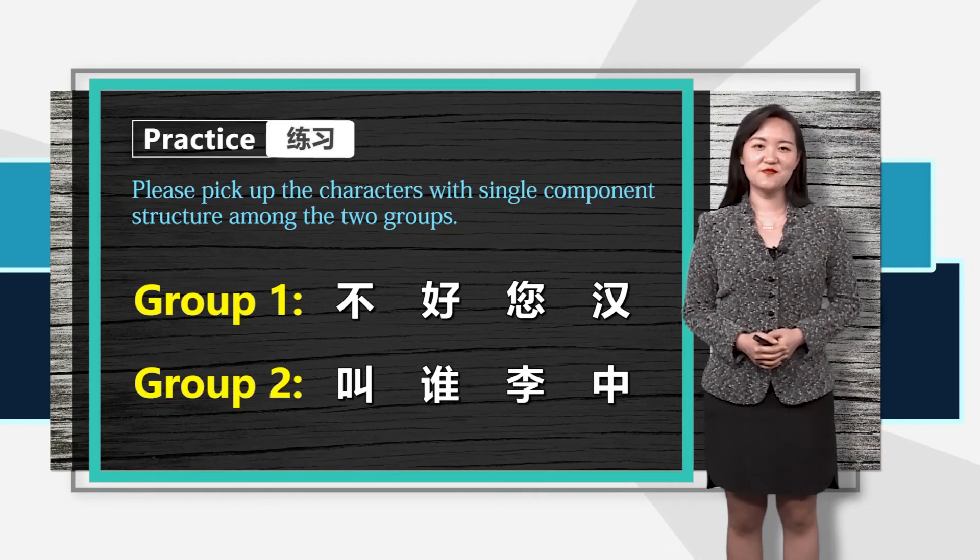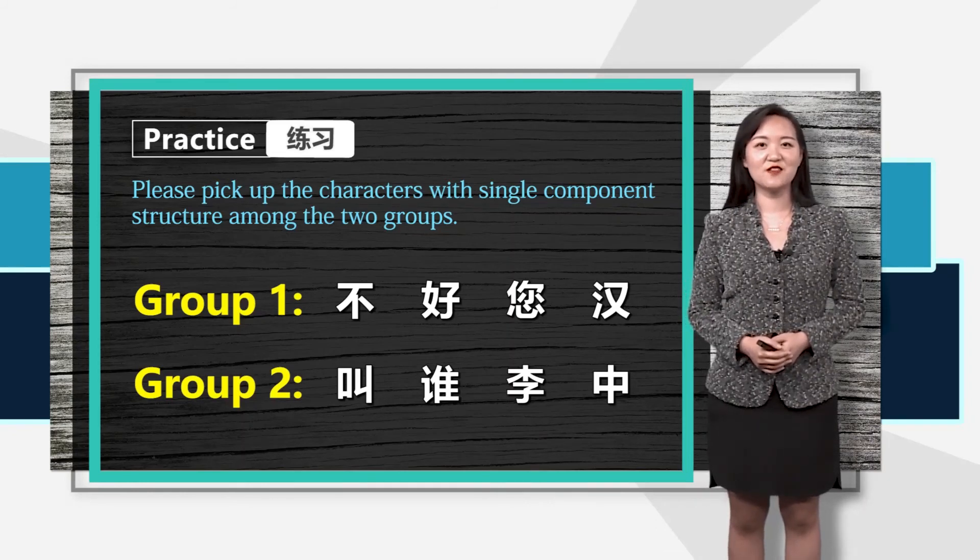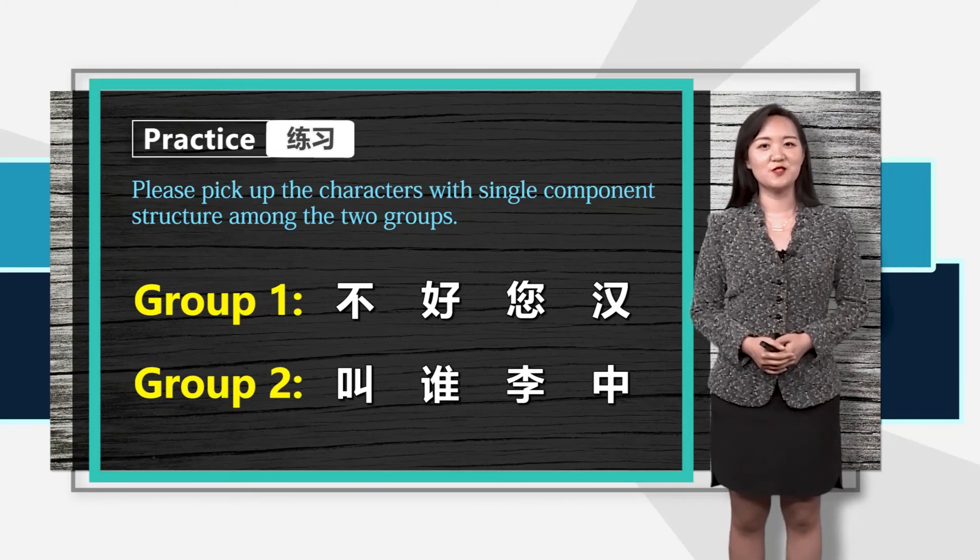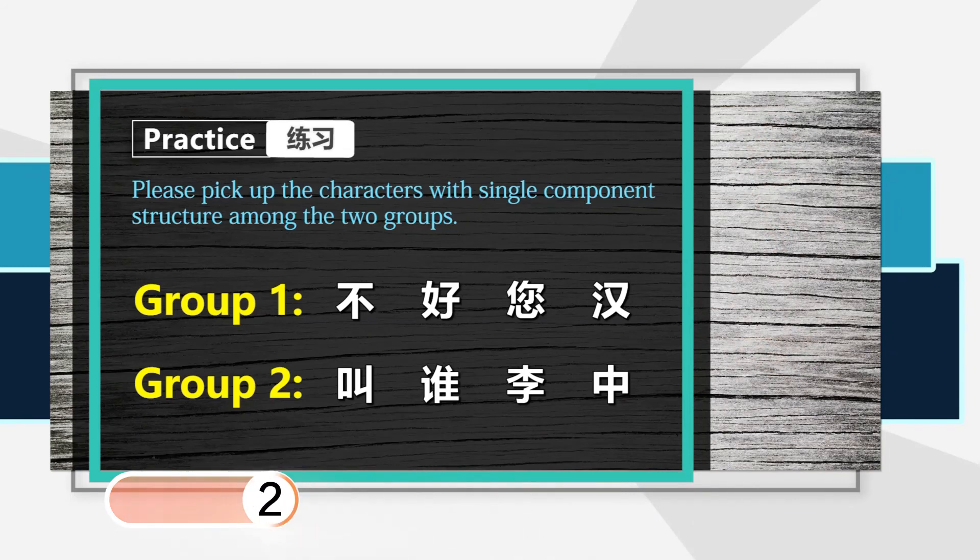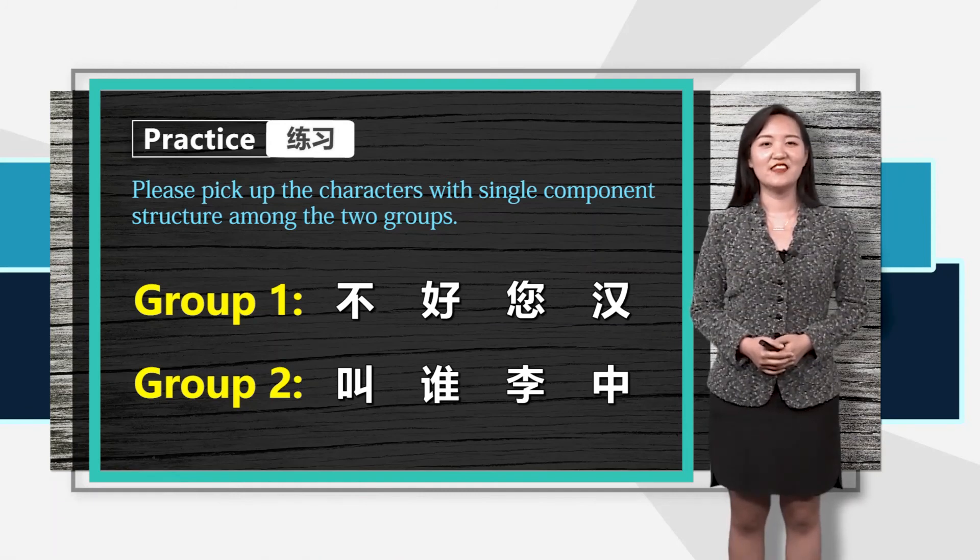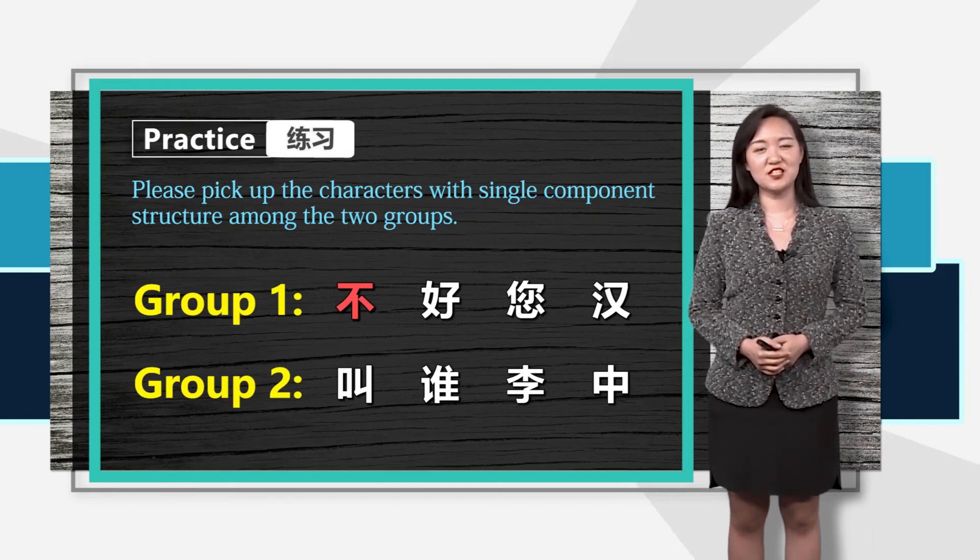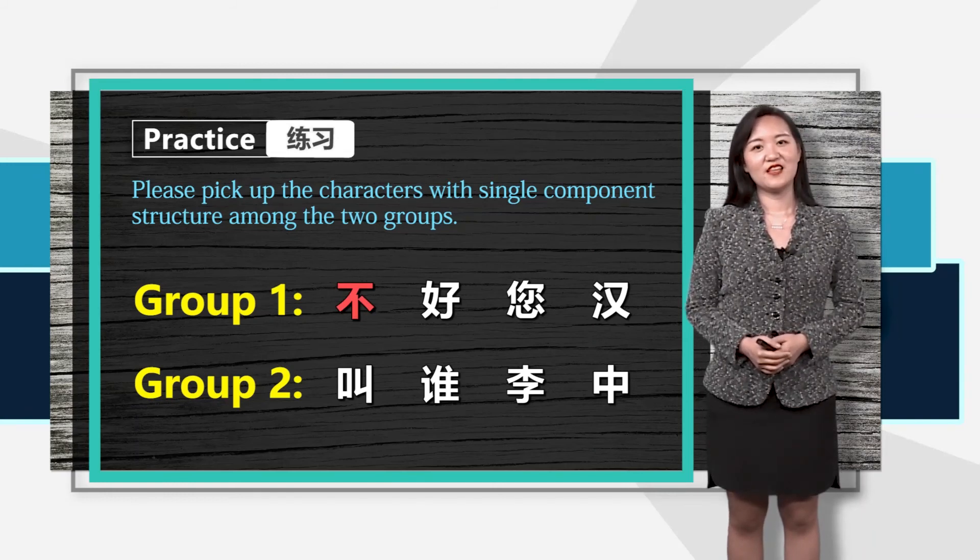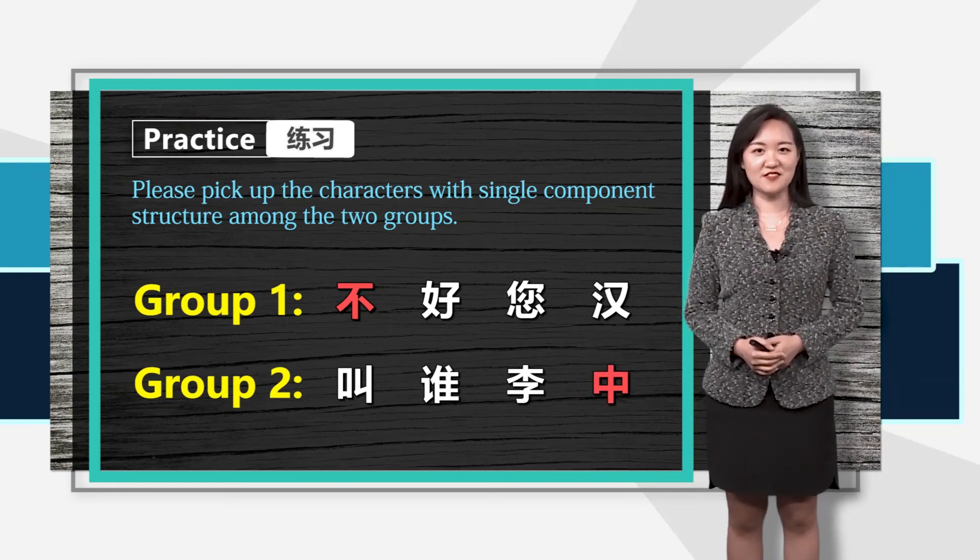Let's do some practice. Please pick up the characters with single component structure among the two groups. Have you found them? In the first group, 不 is a single component structure. In the second group, 中 is the right answer.